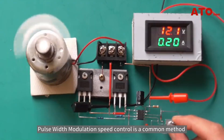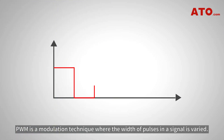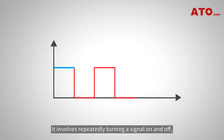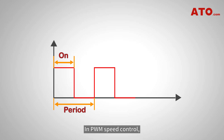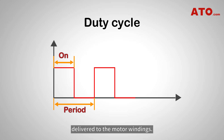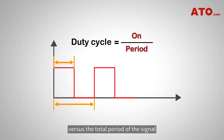Pulse width modulation speed control is a common method used to regulate the speed of brushless DC motors. PWM is a modulation technique where the width of pulses in a signal is varied. It involves repeatedly turning a signal on and off, with the width of each pulse representing the signal's amplitude. In PWM speed control, the duty cycle of the PWM signal determines the average voltage delivered to the motor windings. Duty cycle represents the proportion of time the signal is on versus the total period of the signal.